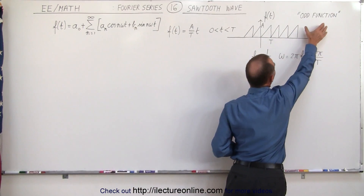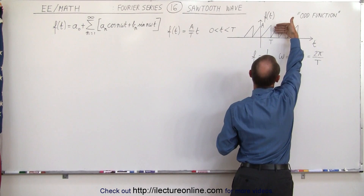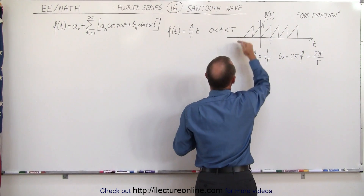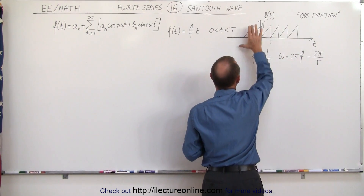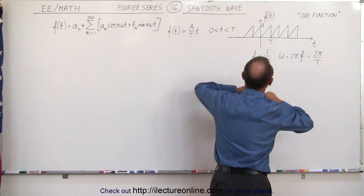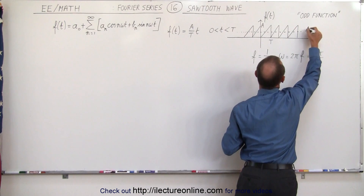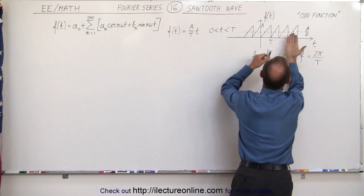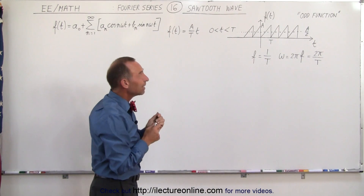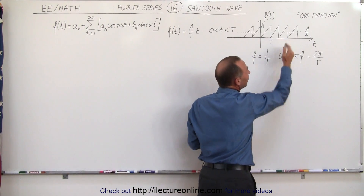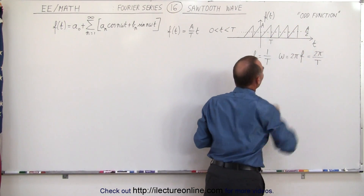Notice this is kind of like an odd function — not quite an odd function. For a true odd function, you should be able to take the right side of the wave, flip it over, and get the exact same image. But that's not the case here. However, if you take the line where y equals A over 2 and flip it that way, then flip it over, you get the exact same image on the left side as on the right side.